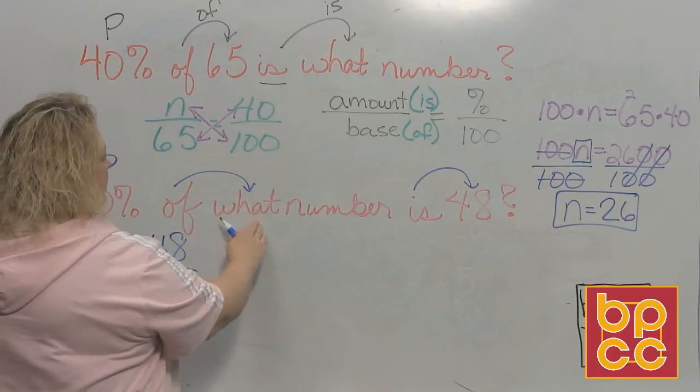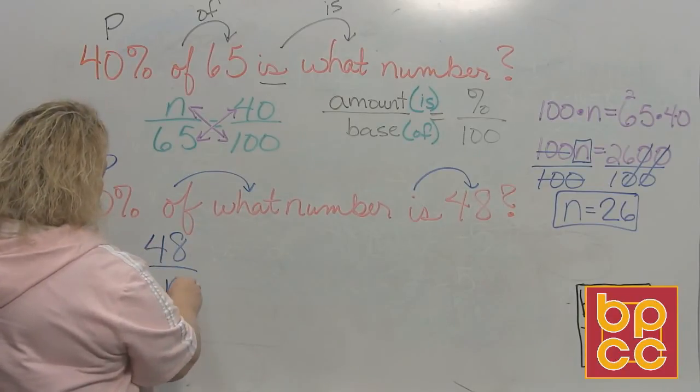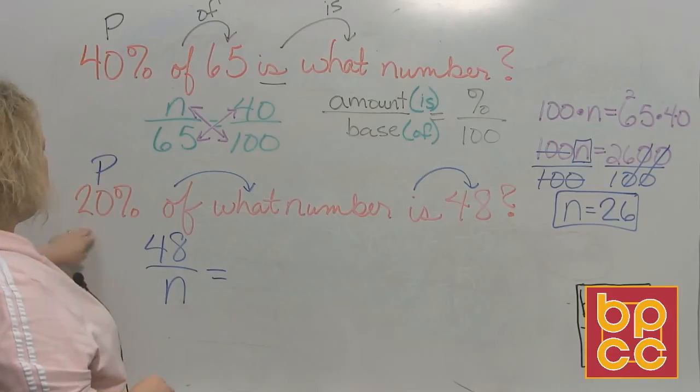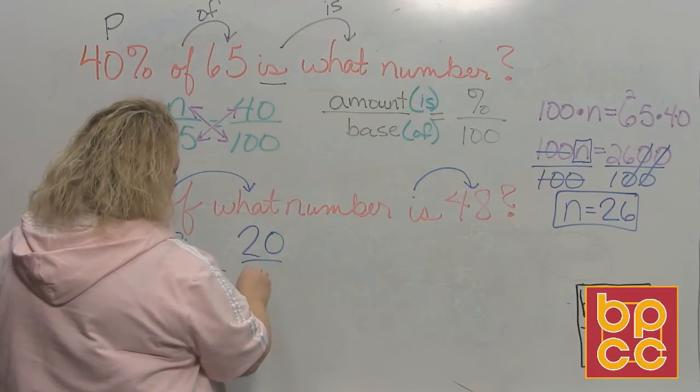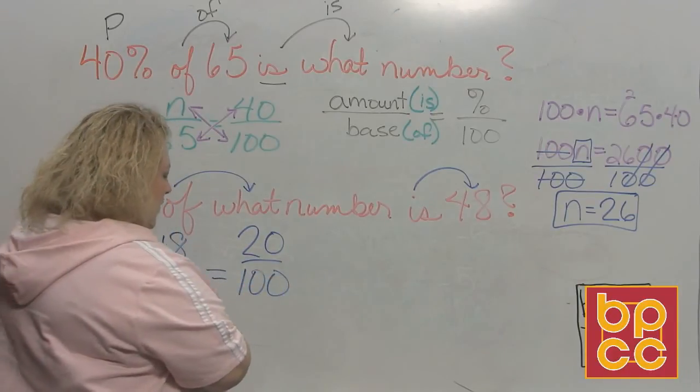Over 'of', of what? That's what I'm missing, so that's where my variable is going to go, is equal to percent, that's 20 over 100. And we're going to cross multiply again.